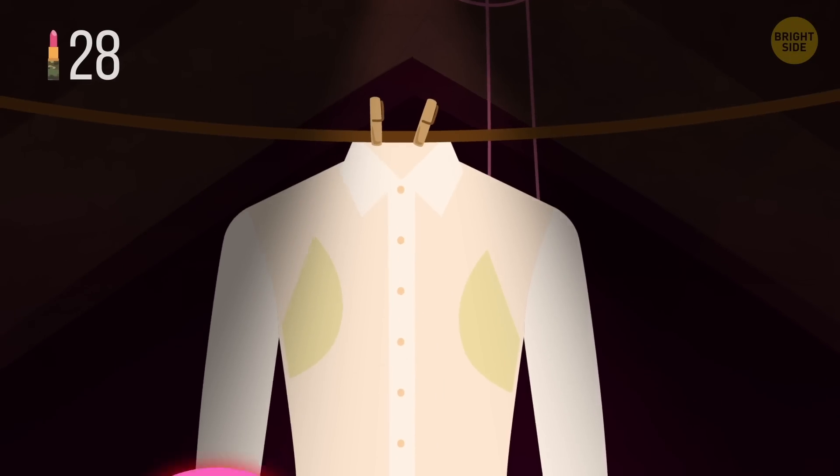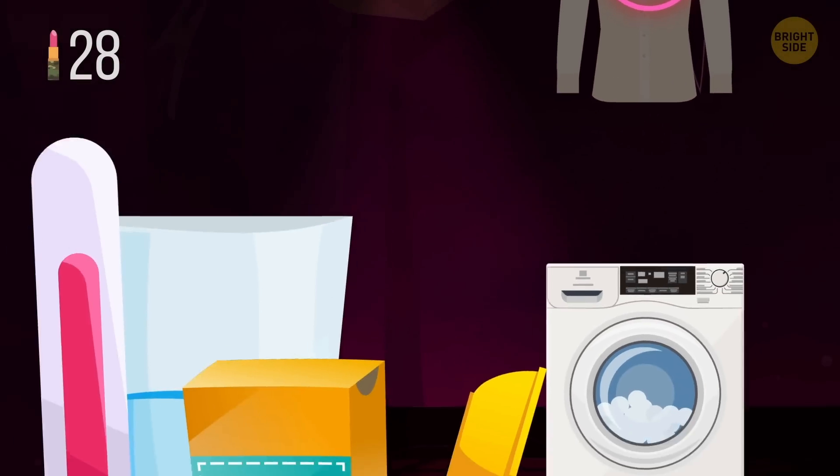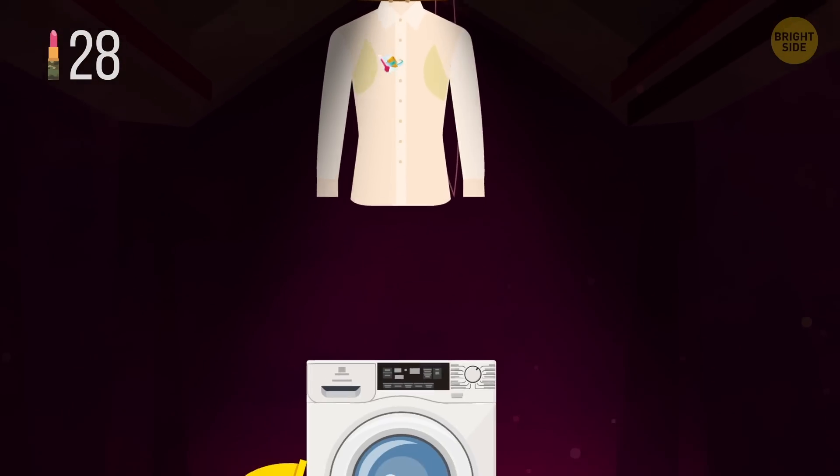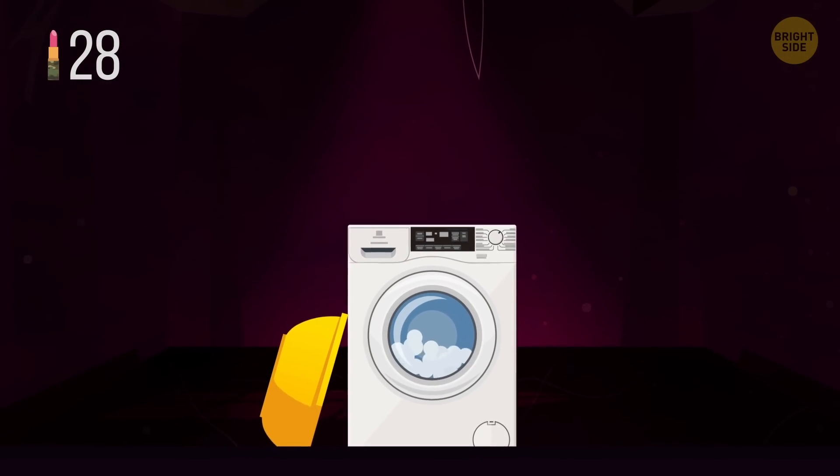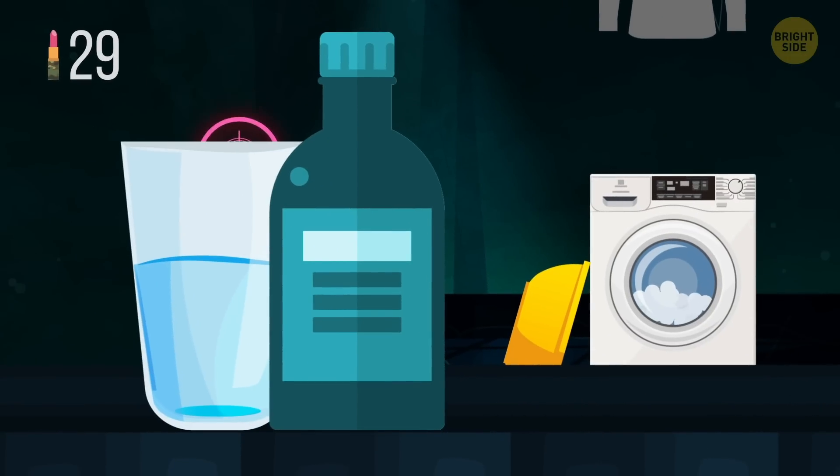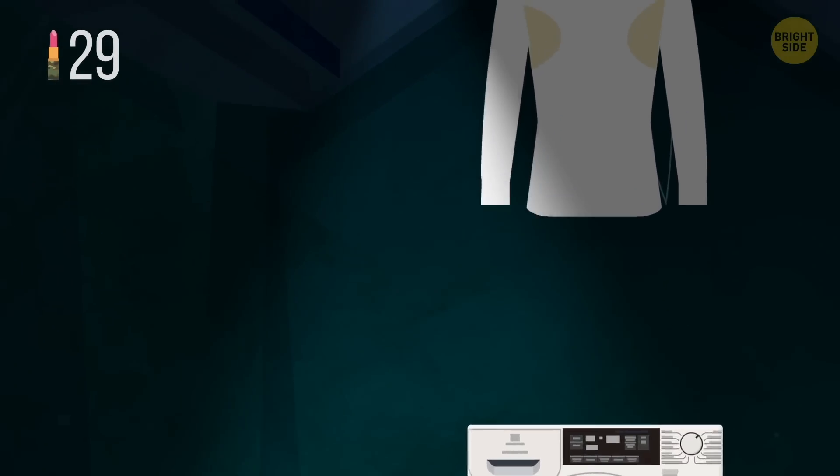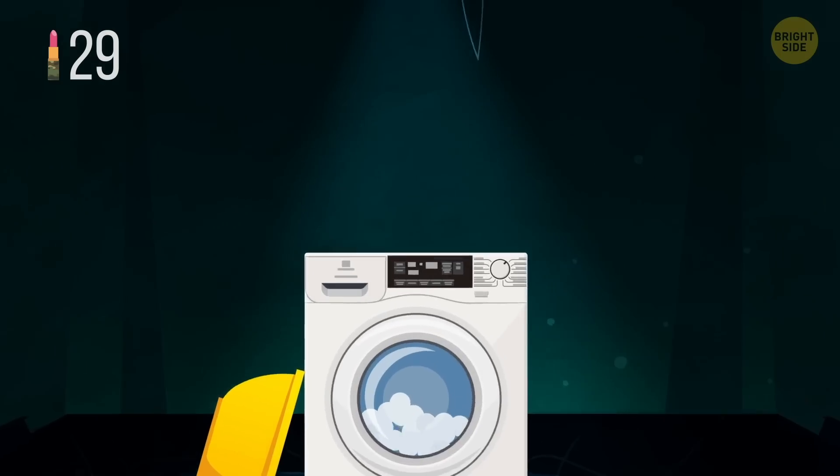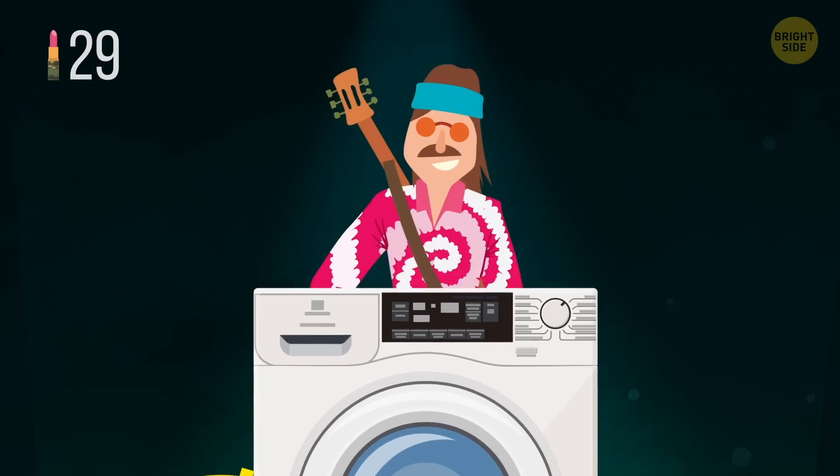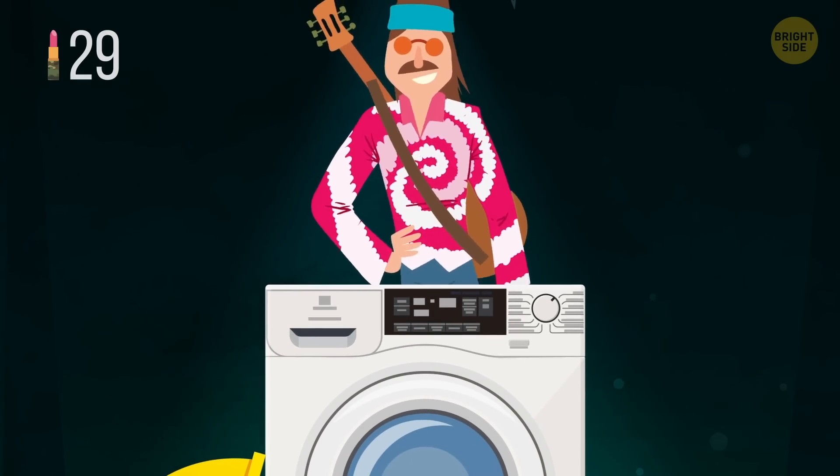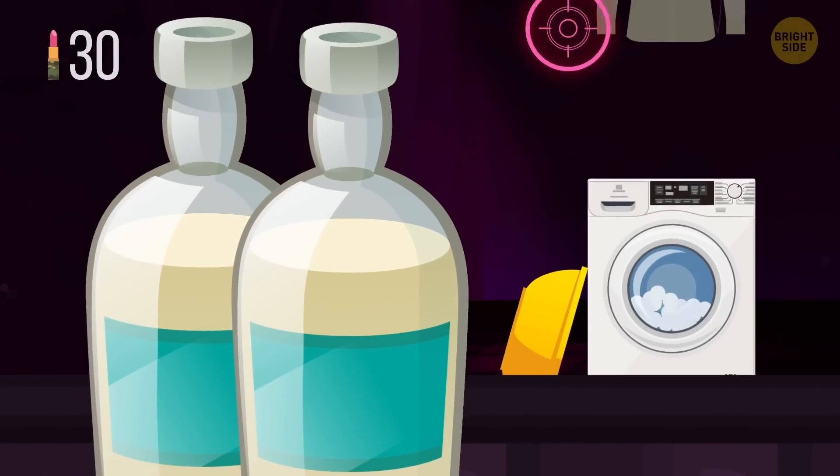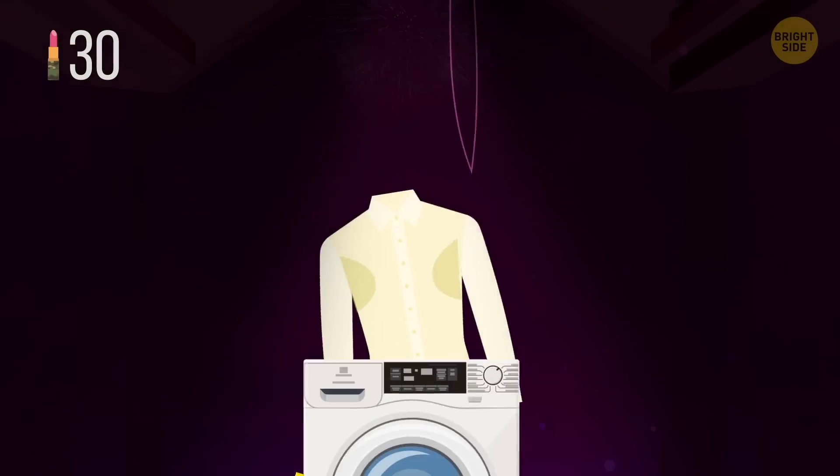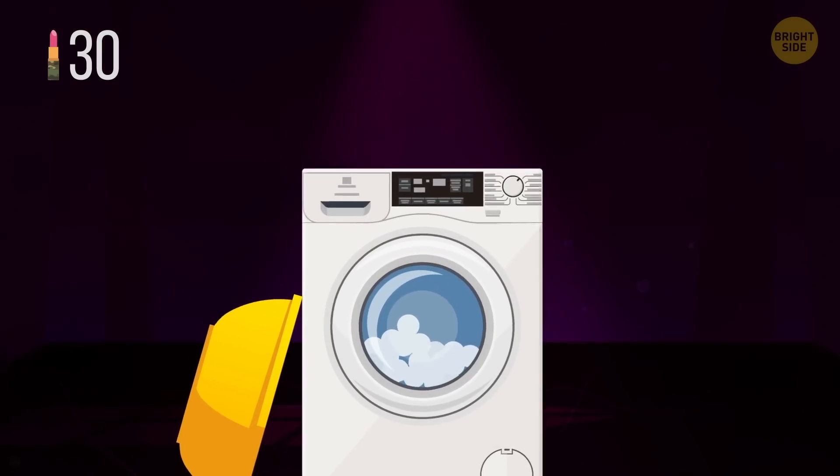To get rid of annoyingly yellow armpit stains on your clothing, sponge the affected area with a solution made of table salt and hot water, then wash as you always do. Also, you can pour a solution of equal parts water and hydrogen peroxide on the sweat stains and leave it for half an hour before washing. But do not use this method on colored clothes. Rubbing some white vinegar directly into the armpit stains before washing is another effective way to make your clothing spotless again.